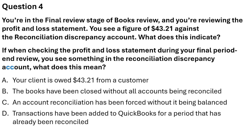Question 4: You are in the final review stage of Books Review and you are reviewing the profit and loss account. You see a figure of 43.21 against reconciliation discrepancies. If you see something in the reconciliation discrepancies account when checking the P&L during your final period end review, what does this mean? The correct answer is: an account reconciliation has been forced without it being balanced. Option C is correct.